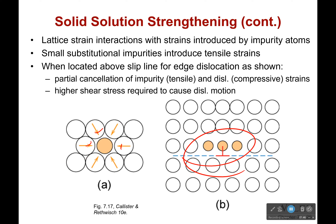Because instead of having big atoms right here, we have small atoms — so there's less compression over there. Because there's less compression on that side, it is actually keeping this dislocation from being able to move, because this is actually making it kind of happy. It's not as closely packed here as it was before, so it's harder for it to move.